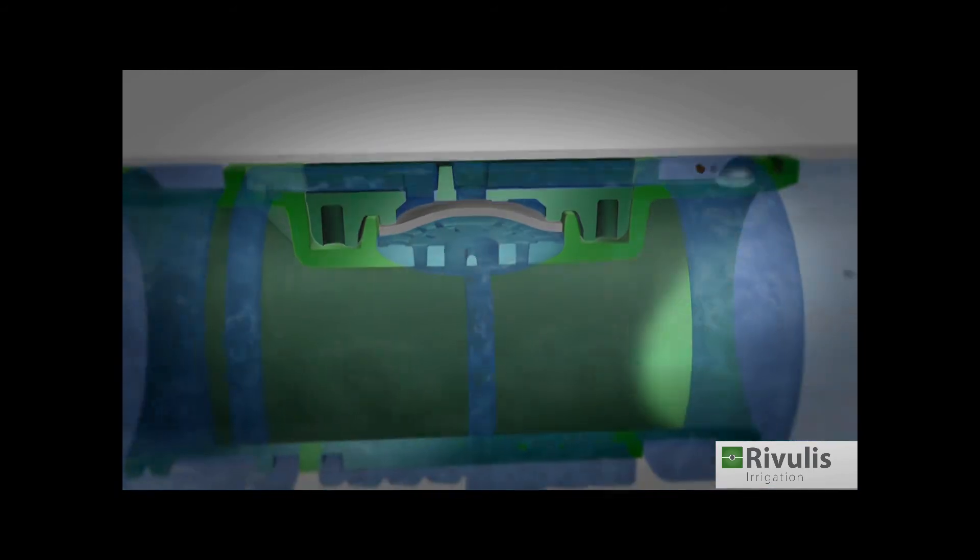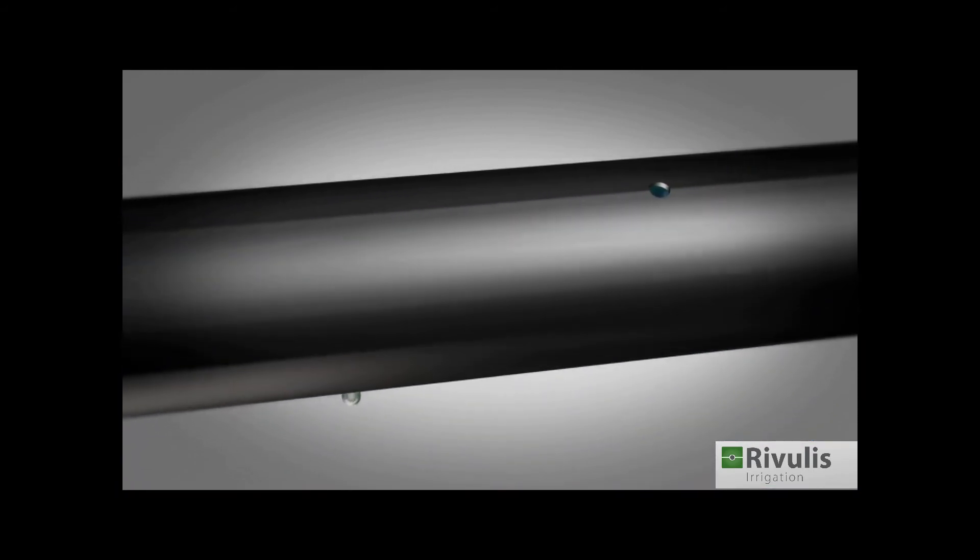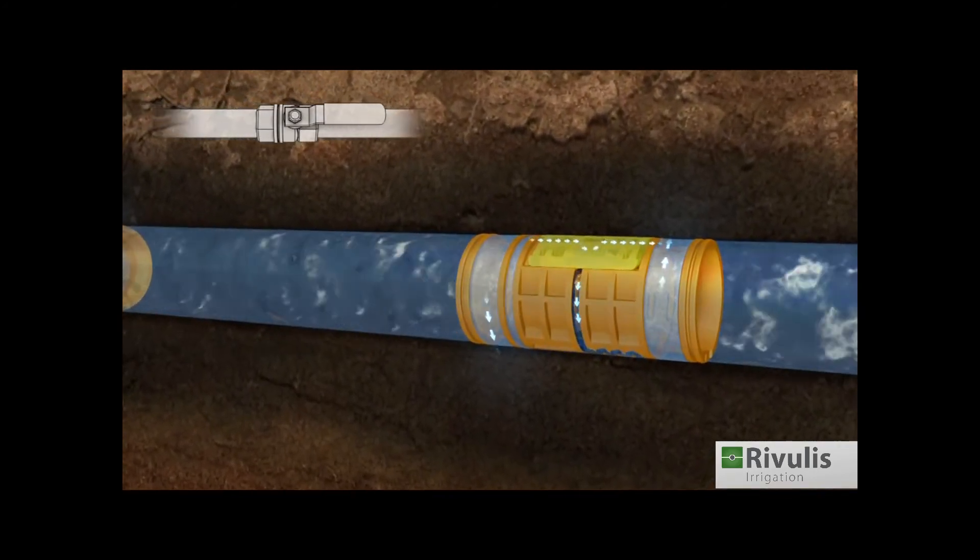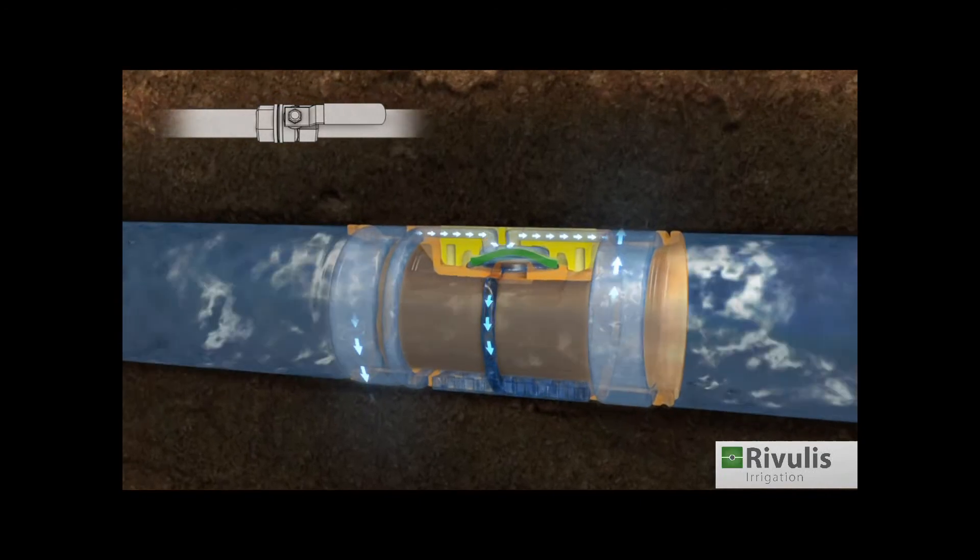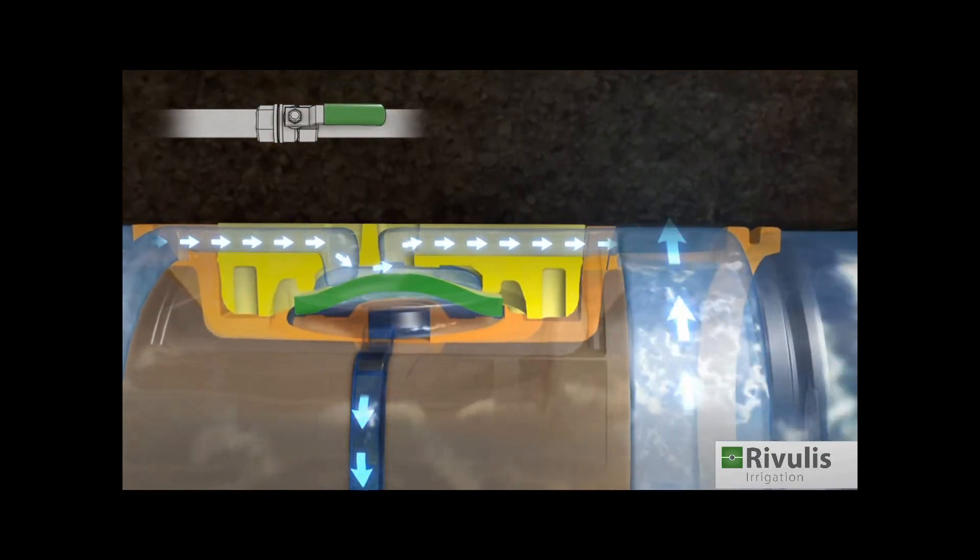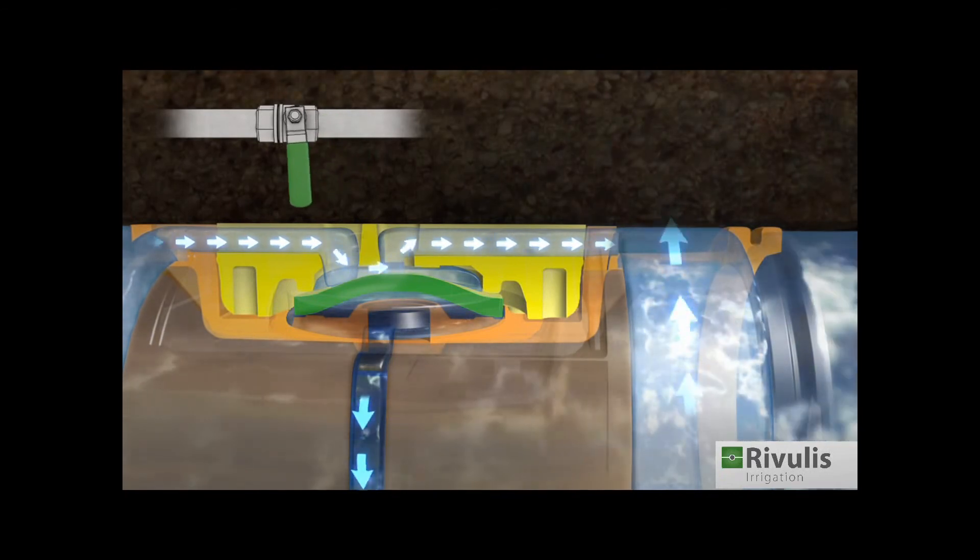The Hydro PC and D with its no-drain drippers is especially designed for pulse operation and subsurface irrigation. The no-drain mechanism protects the drip line from soil particle infiltration when the water is shut off.